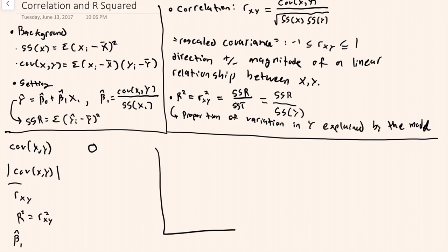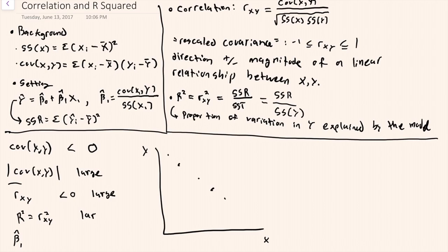In one setting, we might have data that look like this. Here the covariance would be negative, and the magnitude of the covariance would be large. The correlation between the two variables would be negative and large. The proportion of variation explained by the model would also be relatively large. The slope coefficient would be negative - whether it's large or small depends on the scaling of x and y, so I won't interpret the slope coefficient's magnitude.